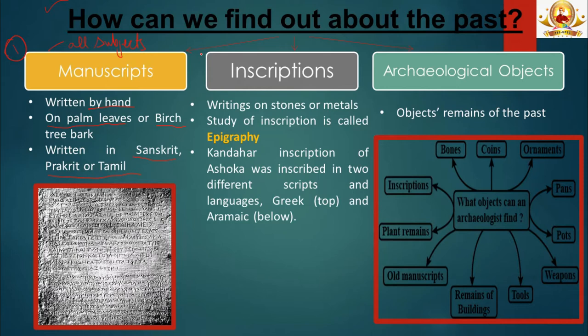The second way to find out about the past is to study inscriptions — writings on hard surfaces like stones or metals. The study of inscriptions is called epigraphy. Sometimes kings got their orders inscribed so people could see, read and obey them. The Kandahar inscription of Ashoka was written in two languages: Greek on top and Aramaic on the bottom, telling us that these languages were used in the Kandahar region.